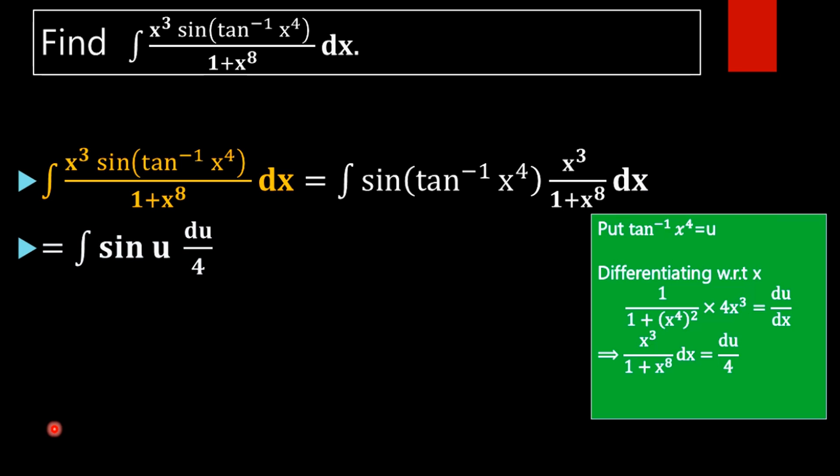Now by rewriting, we will get integral of sin u into du by 4, so our function gets reduced like this. Next we are going to integrate it. What is integral of sin u? That is minus cos u.